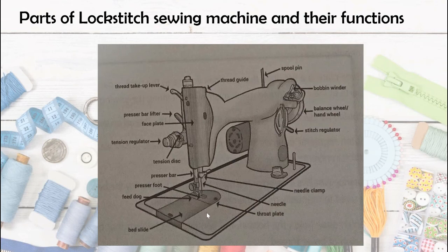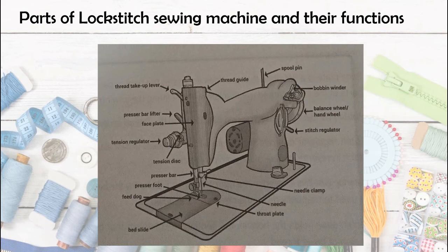The bobbin case holds the bobbin and contains the mechanism that controls the tension of the lower thread. We have the bobbin containing thread, and it needs a holder — the bobbin case — where we place the bobbin with thread. Next, the bobbin holds the lower thread. We will see the bobbin in the video on the latter part of this lesson.